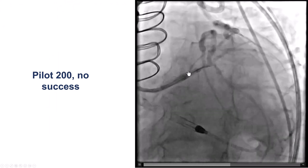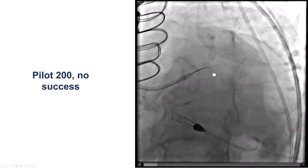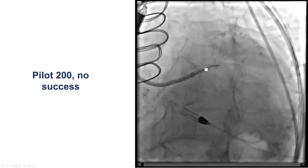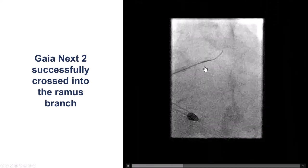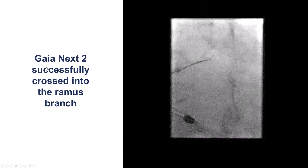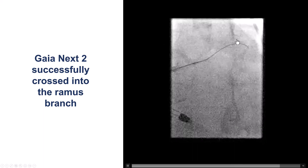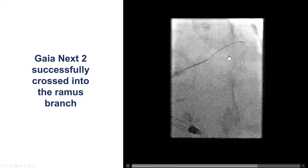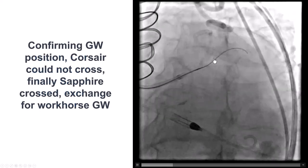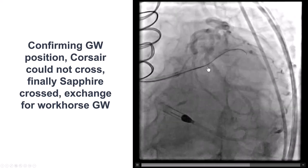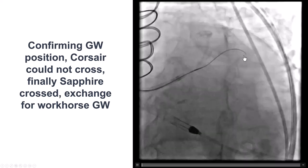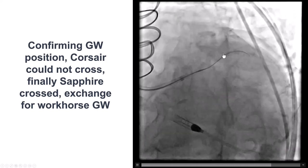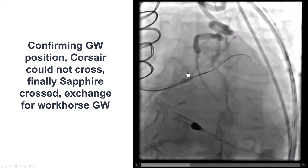Using an EBU guide and microcatheter, a Pilot 200 stiff-tip polymer-jacketed wire was tried initially but was unable to penetrate despite the short occlusion length. However, using a Gaia Nex 2, the wire was fairly quickly advanced into a branch. Contralateral injection from the LIMA confirmed this was the Ramus branch. The guidewire had entered into the Ramus branch, and the next step was to advance the microcatheter and switch the Gaia for a workhorse guidewire, but nothing would cross.